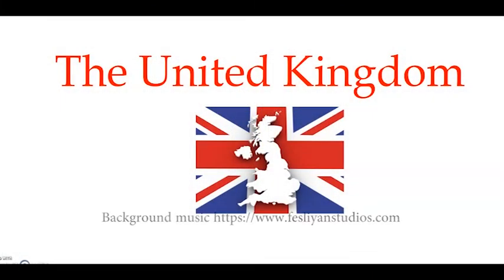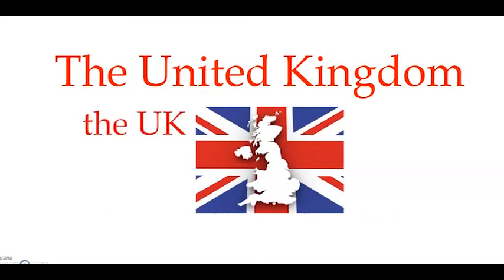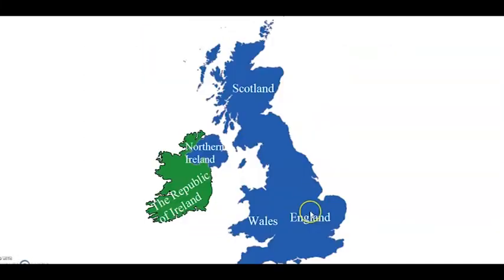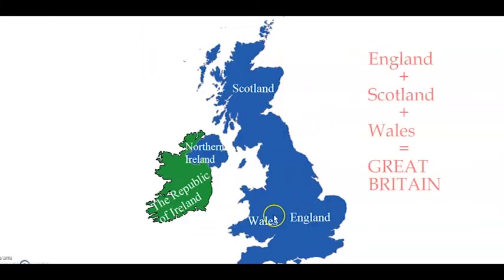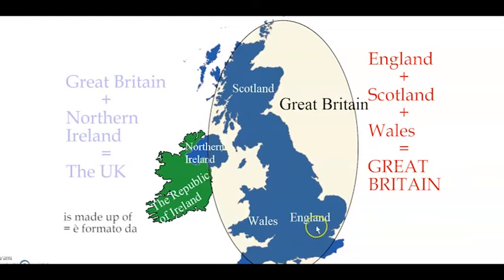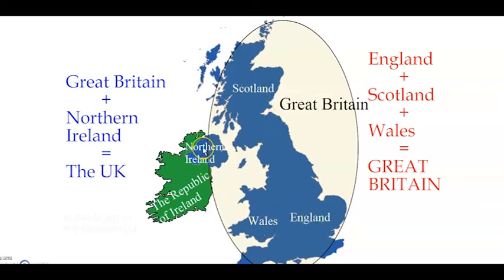Today's topic is all about the United Kingdom, or the UK. The United Kingdom is situated in the North Atlantic Ocean. England, Scotland, and Wales form Great Britain. The United Kingdom is made up of four countries: England, Scotland, Wales, and Northern Ireland.